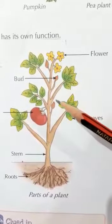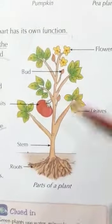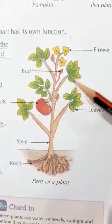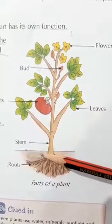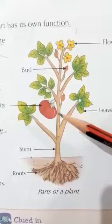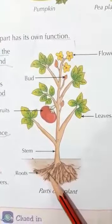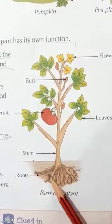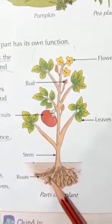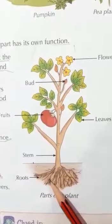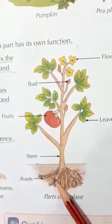Plants have many different parts. Each part has its own function. Roots grow under the ground. They fix the plant in the soil.